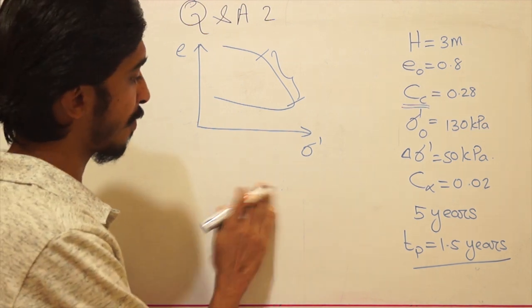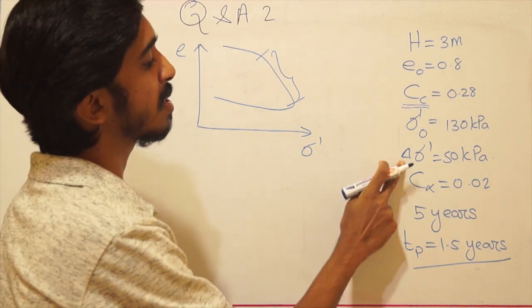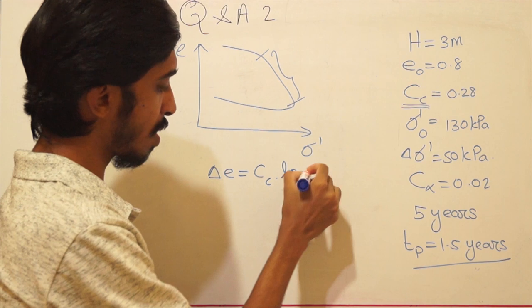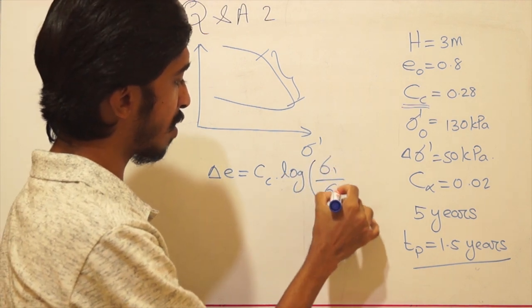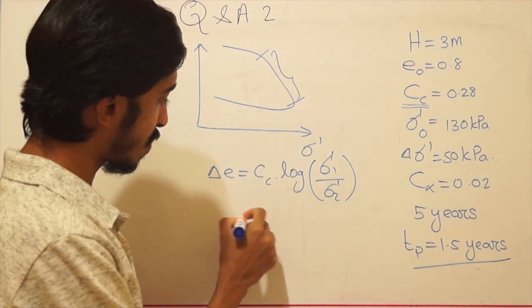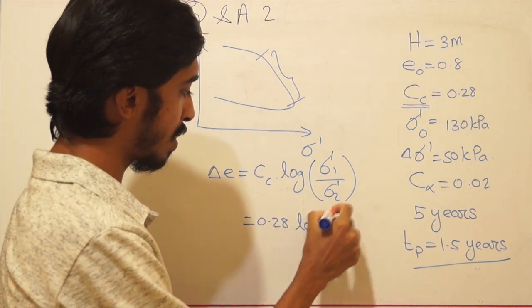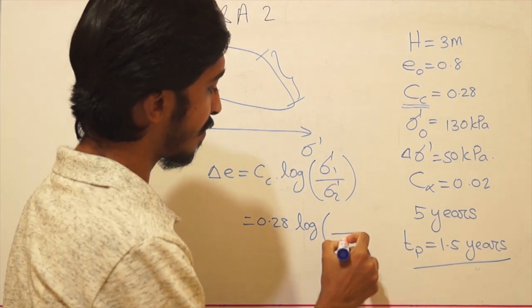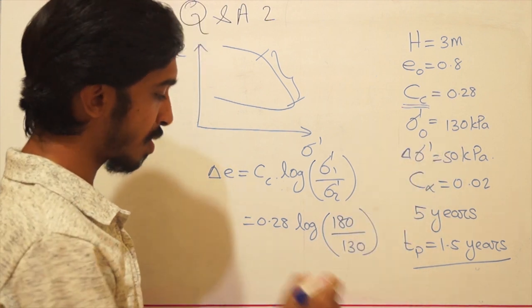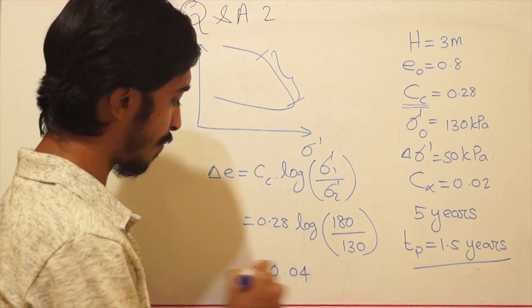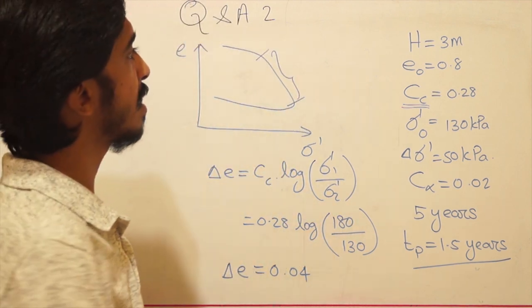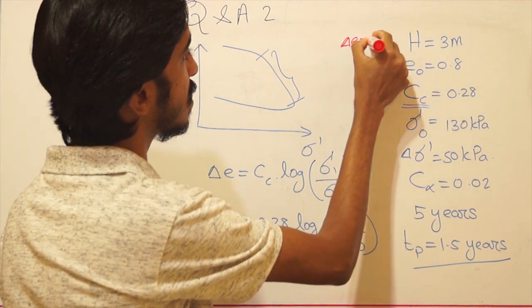When we take the void ratio change due to the stress increment, we write the equation as: Δe = Cc × log(σ₁/σ₀). Calculating this: 0.28 × log(180/130), where the initial stress is 130 kPa and after loading it is 180 kPa. The change in void ratio works out to 0.04.